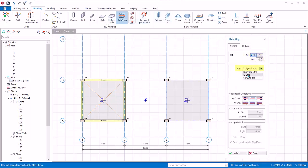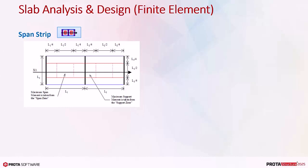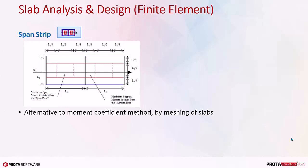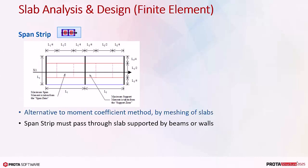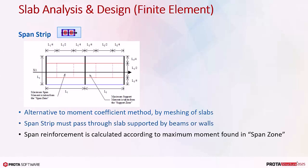Click on the slab strip icon. Start with direction X. Since we want to use the finite element slab design method, change type to FE strip. For finite element strip there are two types: span strip and fixed band strip. Span strip is the alternative to the moment coefficient method by meshing of slabs. Span strip must pass through slab supported by beams or walls — for example, one beam at the left side, then one slab, then one supporting wall at the right-hand side. Span reinforcement is calculated according to the maximum moment found in the span zone.